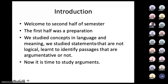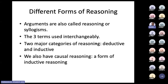There are different forms of reasoning. Arguments are also called reasoning or syllogisms — the three terms are used interchangeably. There are two major categories: deductive and inductive. We have either deductive reasoning, argument, or syllogism, and then inductive reasoning, argument, or syllogism. We also have causal reasoning, but it's a form of inductive reasoning, and we'll see that in two weeks' time.